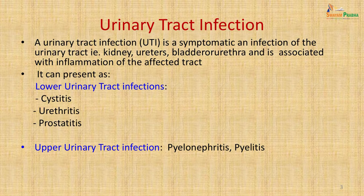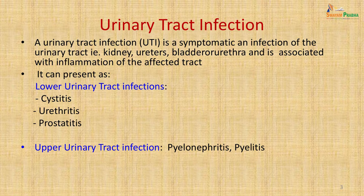A urinary tract infection is a symptomatic infection of any part of the urinary tract. It could involve the kidney, ureters, bladder or urethra and is generally associated with localized inflammation of the affected part. It can present with lower urinary tract symptoms clinically as cystitis, urethritis or prostatitis, or it can present with upper urinary tract infection like pyelonephritis and pyelitis.